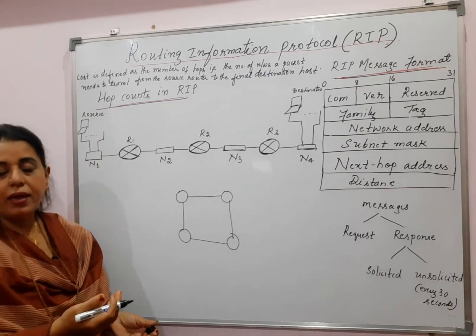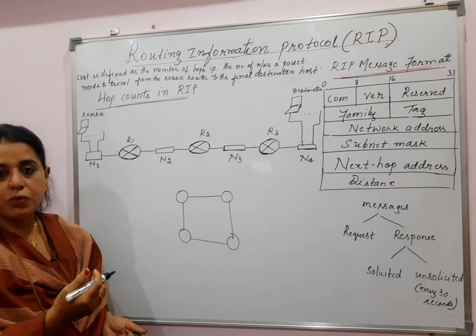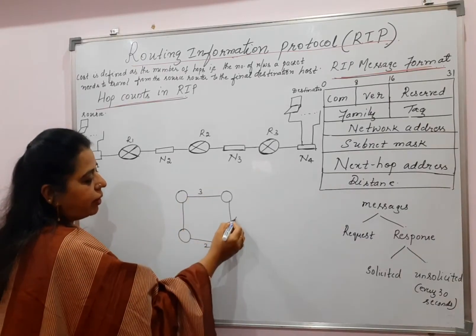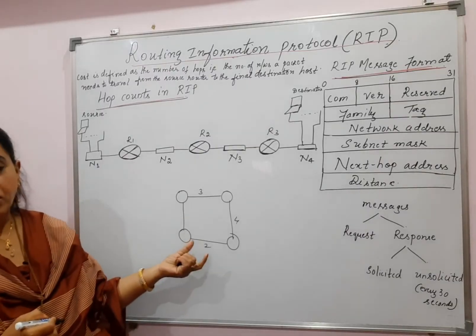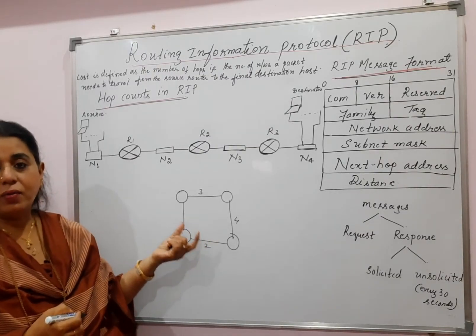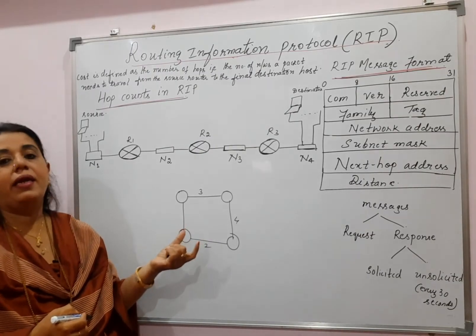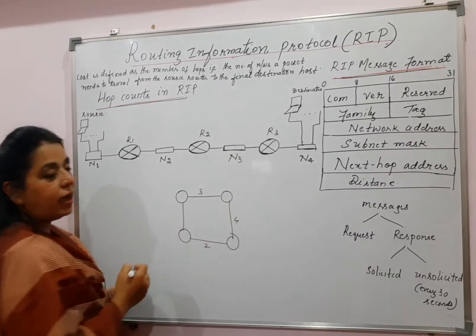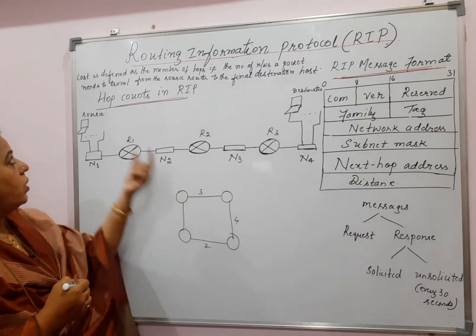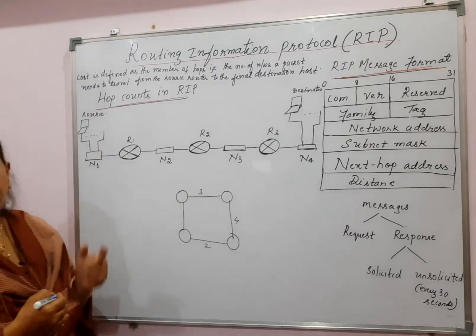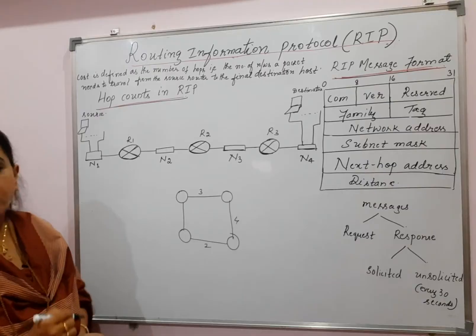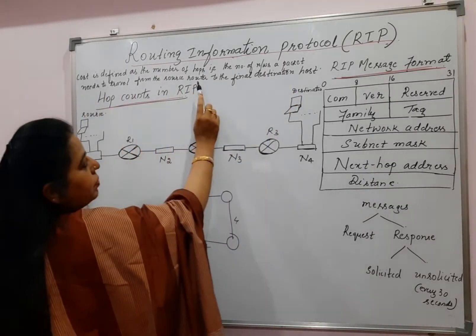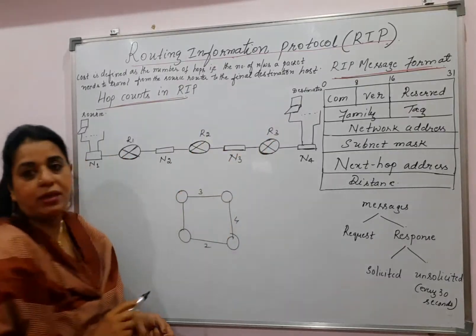When you were earlier carrying out the different examples using distance vector routing, there was some weight, some cost — some numbers that were represented on the edges of the graph. That was indicating the cost for that particular node to reach the other node. This cost is defined in the Routing Information Protocol as the number of hops, that is the number of networks a packet needs to travel from the source router to the final destination host.